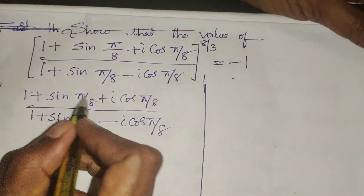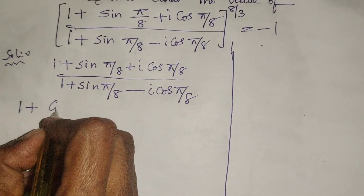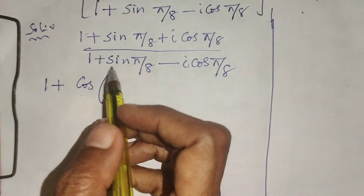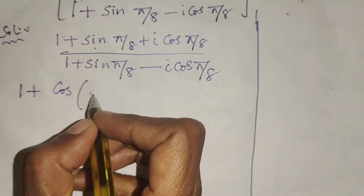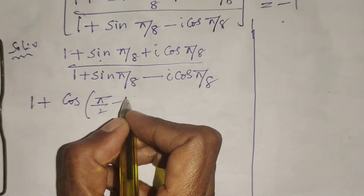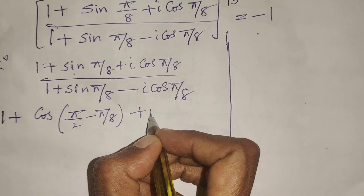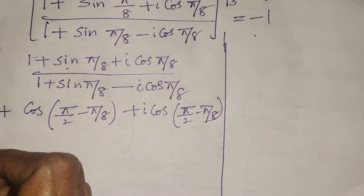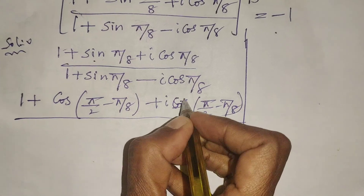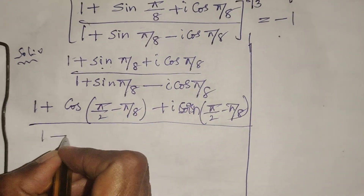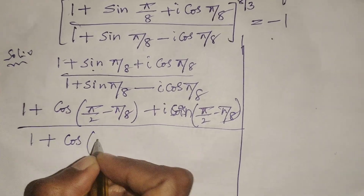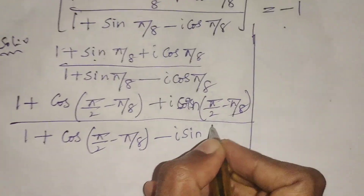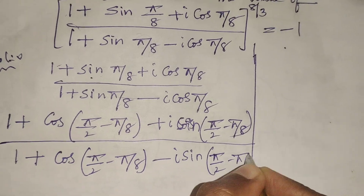First of all, in place of sin(π/8), we write cos(90° - θ). We know the formula: sin θ = cos(90° - θ). Here θ means π/8, so we get π/2 - π/8, giving us cos(π/2 - π/8) + i·cos(π/2 - π/8) in the numerator. The denominator also becomes 1 + cos(π/2 - π/8) - i·sin(π/2 - π/8).